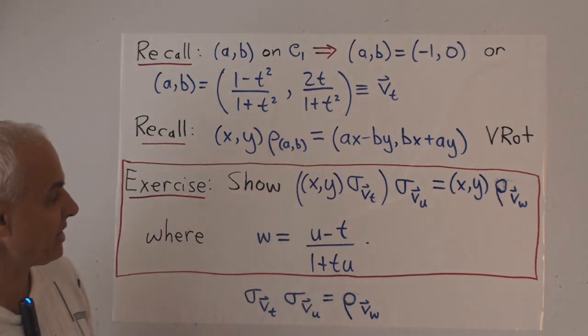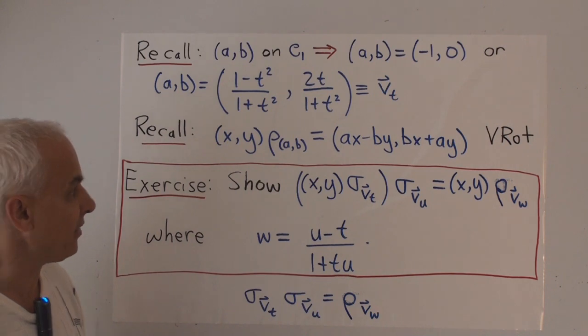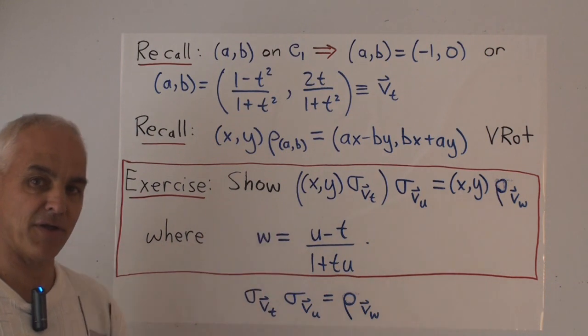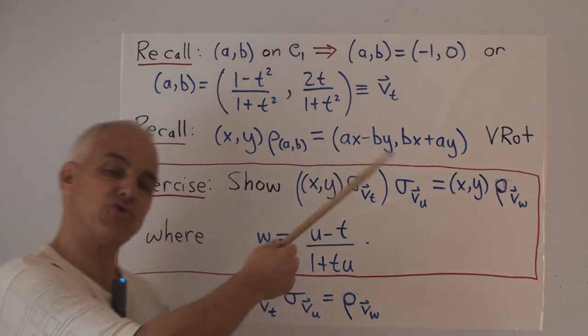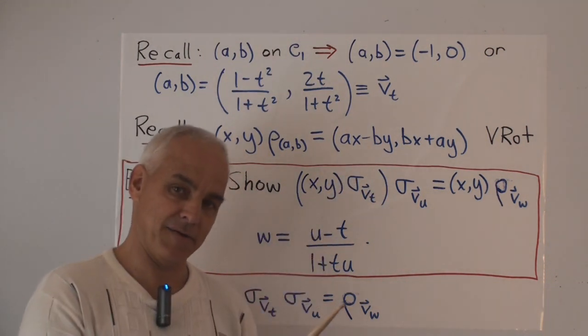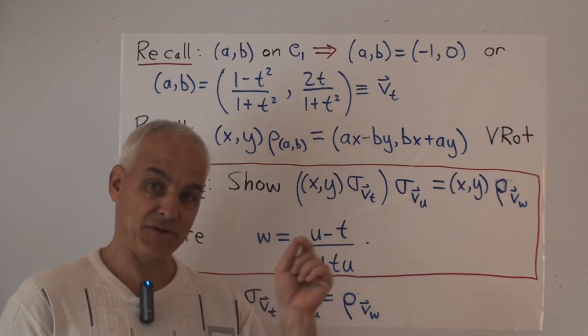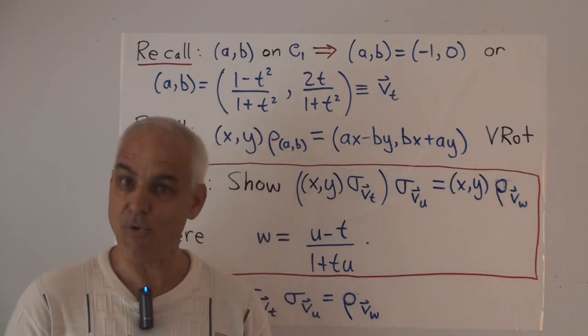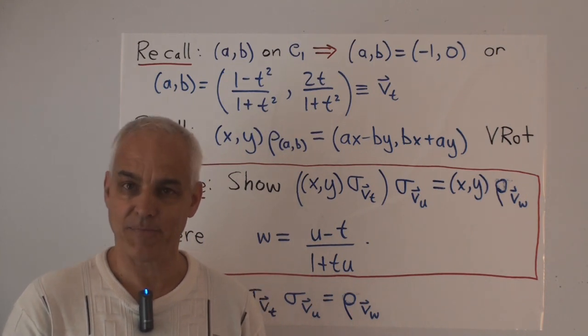Another point is that we haven't yet connected the parameter AB, the point or vector on the unit circle, to the actual line that we were reflecting in. That's another very interesting point that we'll study and that will lead us to many more important understandings.